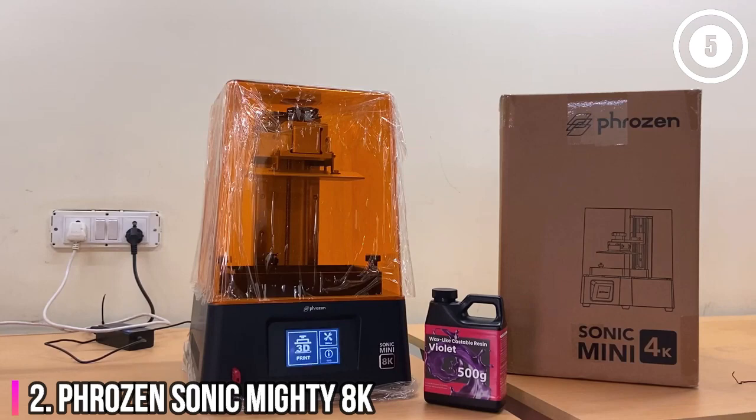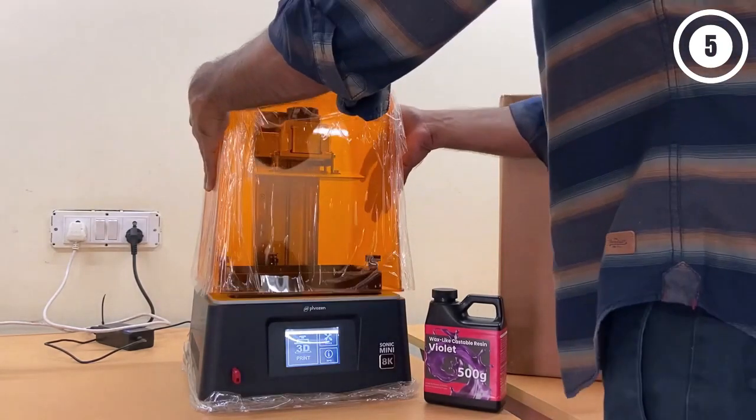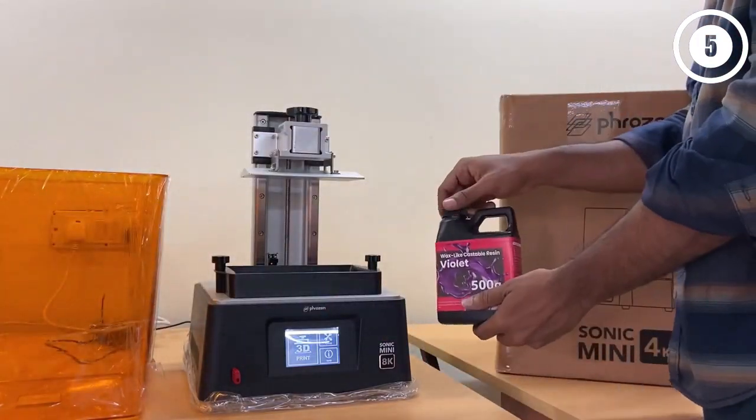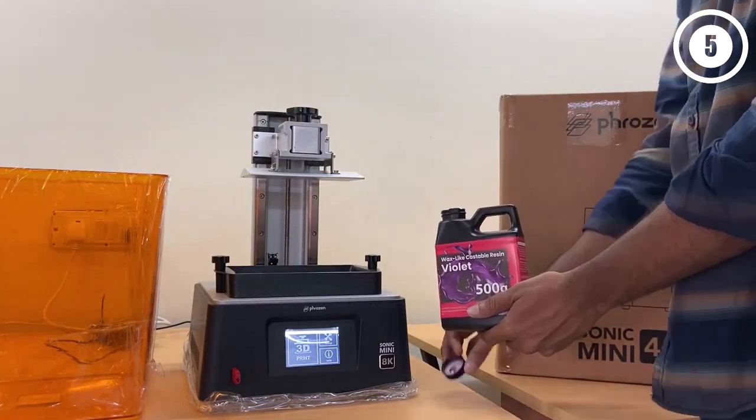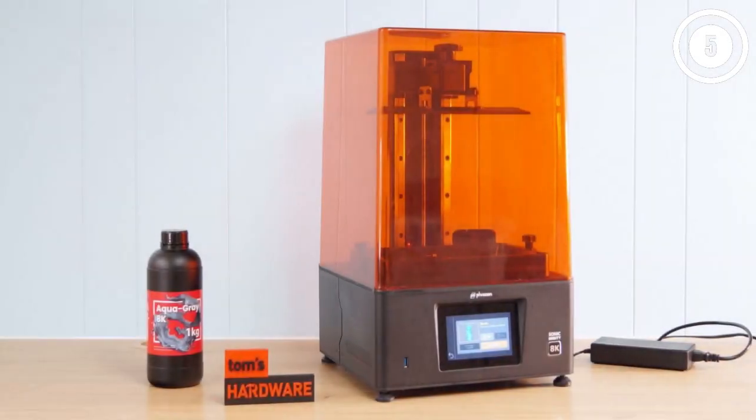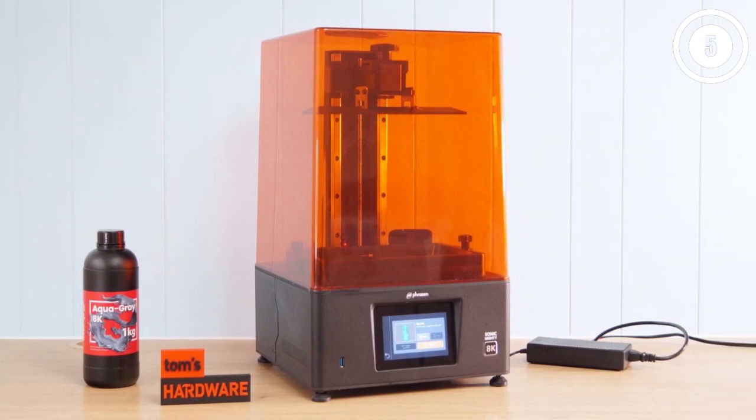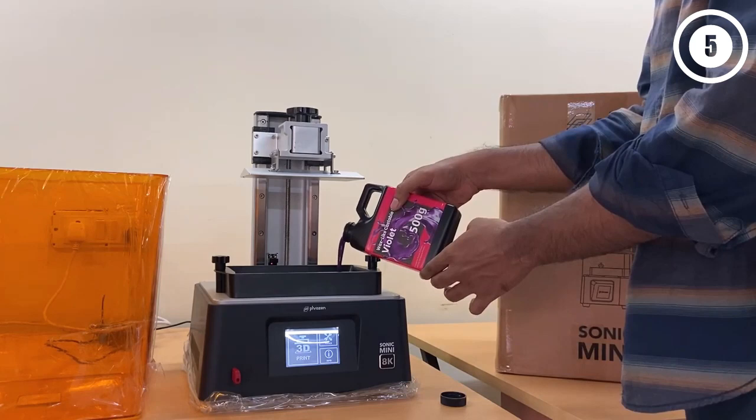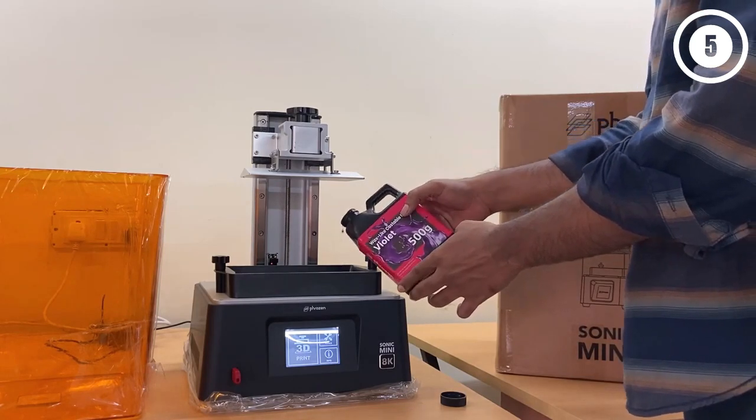Frozen Sonic Mighty 8K, Best High-End Resin 3D Printer. If you're ready to throw some serious cash down for a decent-sized resin 3D printer with quality that will knock your socks off, the Frozen Sonic Mighty 8K is here for you. Its roomy 218x123mm build plate can accommodate an army of gaming miniatures or a gift-worthy superhero statue.